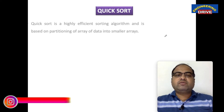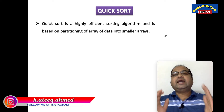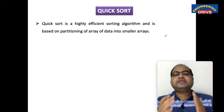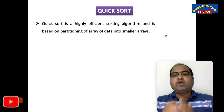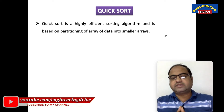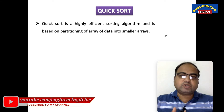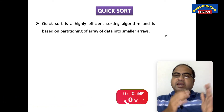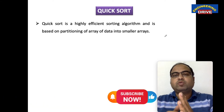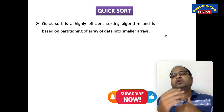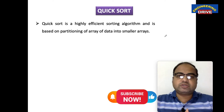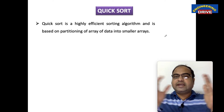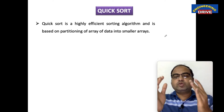Quicksort is a highly efficient sorting algorithm and is based on partitioning of an array of data into smaller arrays. Like how we have done in merge sort where we divide the problem into parts, in quicksort also we are going to make use of a similar approach — where we are going to divide the entire array into smaller arrays.